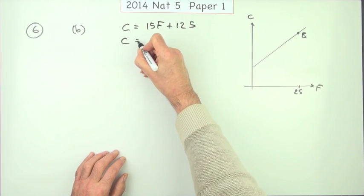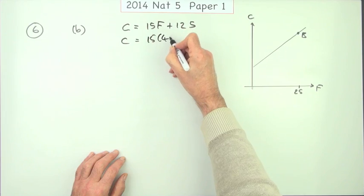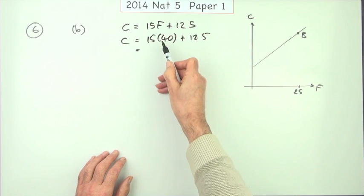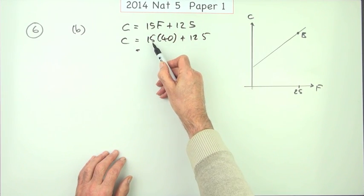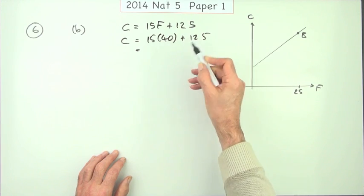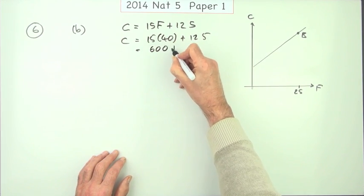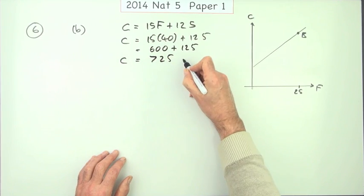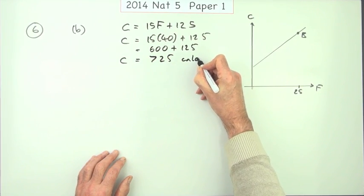So that means the number of calories will be 15 times, and it said it was 40 grams. No calculator. That's not much in the way of working. Four 15s are 60, so that's 600 plus it, I'll put it down. 600 plus 125, which is 725. I might as well put those units in that it said calories.